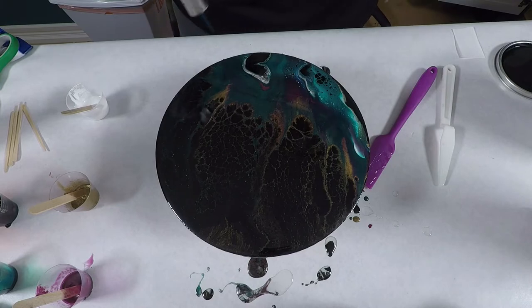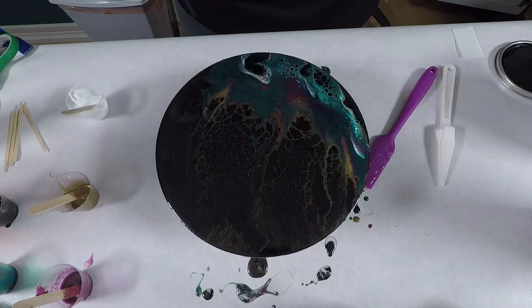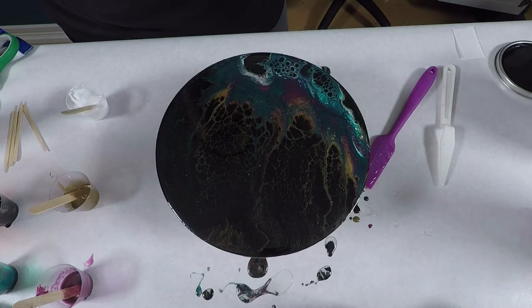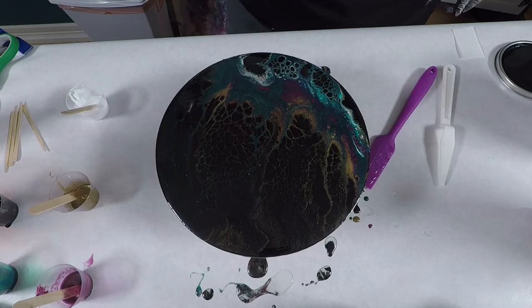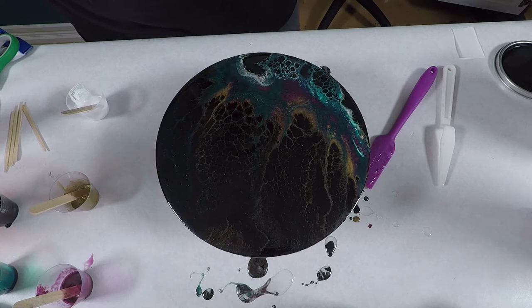And then you'll see when I take the torch here, some of those cells, especially in the white, really start to pop out. And you can kind of say, hey, I want the cells here. So I'm going to do a little bit more heat here. You don't want to do too much heat. But just enough over it quickly, and you'll see the cells start popping up.